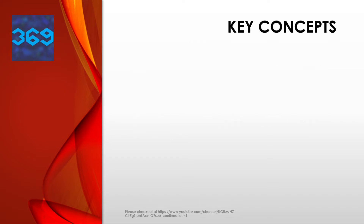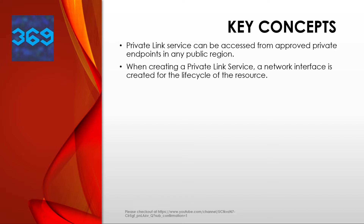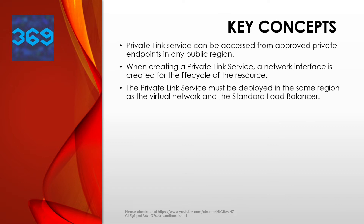Let's look at the key concepts for Azure Private Link. The Azure Private Link service can be accessed from approved private endpoints in any public region. Private endpoints can be reached from the same virtual network, traditionally peered VNets, globally peered VNets, and on-premises using private VPN or ExpressRoute connection. When creating a private link service, a network interface is created for the lifecycle of the resource, and this interface is not managed by the customer — it is managed by the provider. The private link service must be deployed in the same region as the virtual network and the standard load balancer, or SLB.